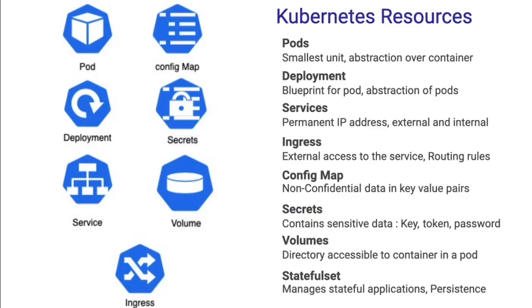Now we'll understand what the different Kubernetes resources are. These are the common terms used in the Kubernetes world: pods, deployment, services, ingress, config map, secrets, volumes, and stateful set. These are the important terms you should know about Kubernetes.